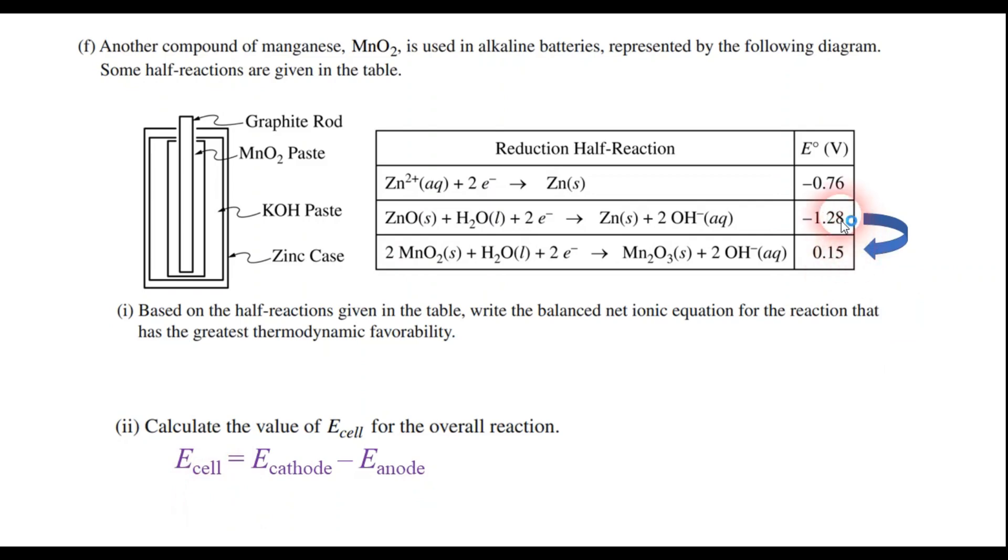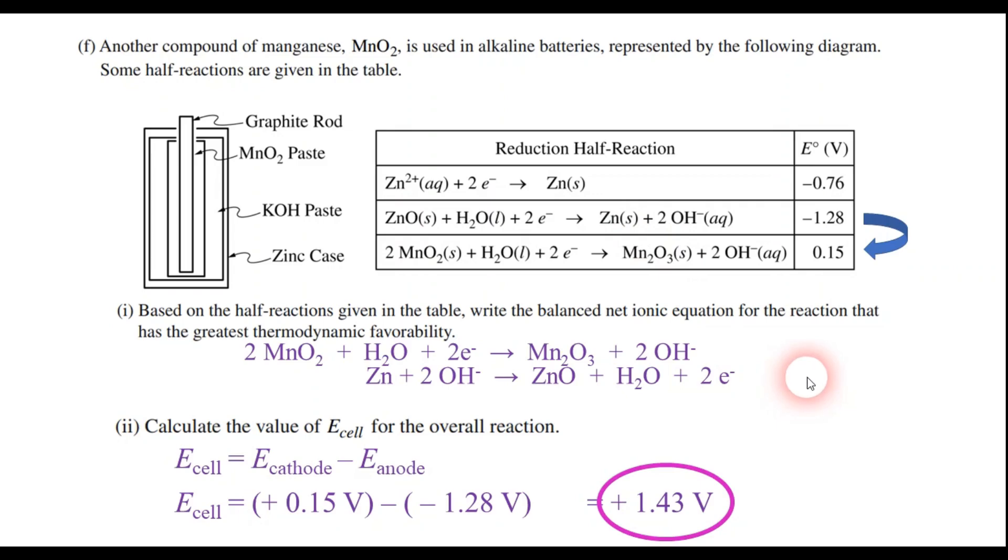So I'm going to go ahead and calculate E cell first in part two. And I know that E cell has to be a positive number. So I have to put these two voltages into the equation such that E cell is positive. And the only way that works is to put the positive 0.15 volts in the cathode slot and put the negative 1.28 volts in the anode slot. So when I do the arithmetic here, I get that my voltage or my E cell is positive 1.43 volts. And remember that the one that we flip when you write the balanced net ionic equation is the anode. Flip the anode. Or as I say, flip an ode.